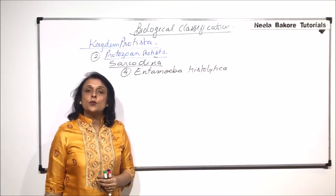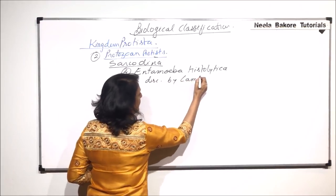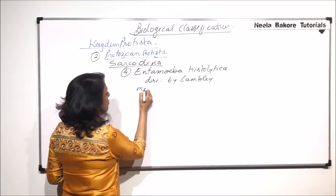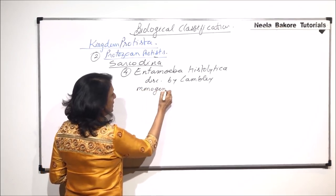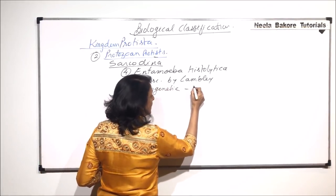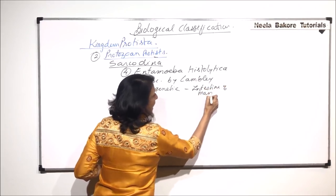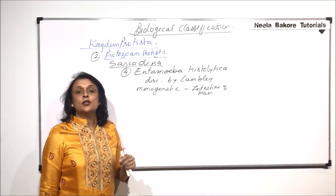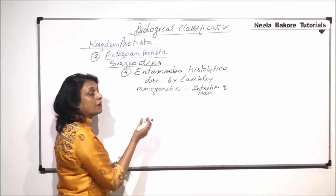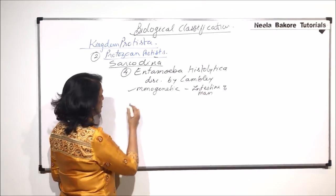Being in Sarcodina, its locomotion is with the help of pseudopodia. It was discovered by Lambl. Entamoeba histolytica is monogenetic, meaning it completes its life cycle only in one host — that is the human. It is found in the intestine, and its infection is caused by oral means: if we take contaminated food and water, we get that infection.